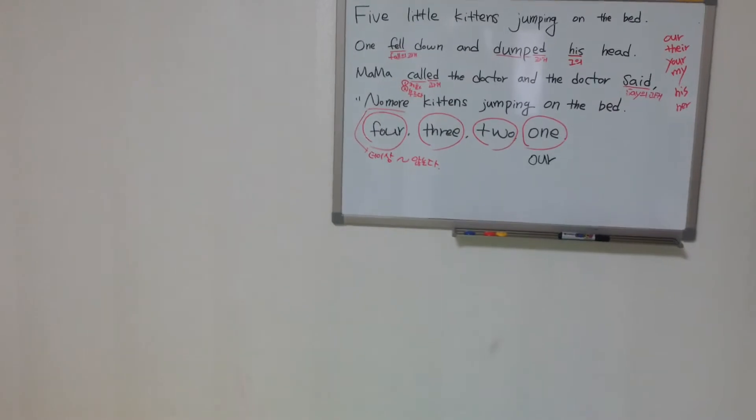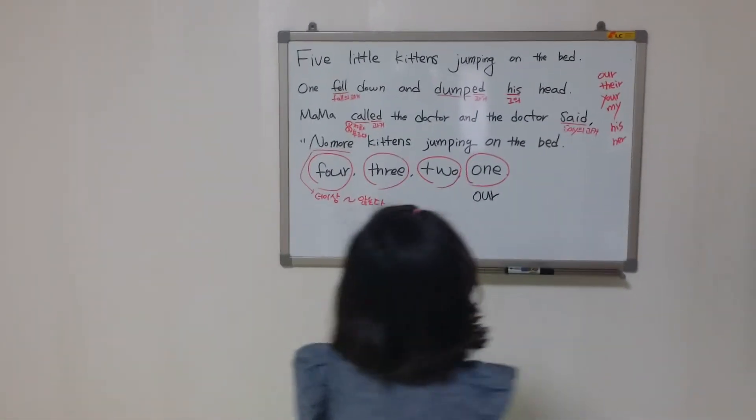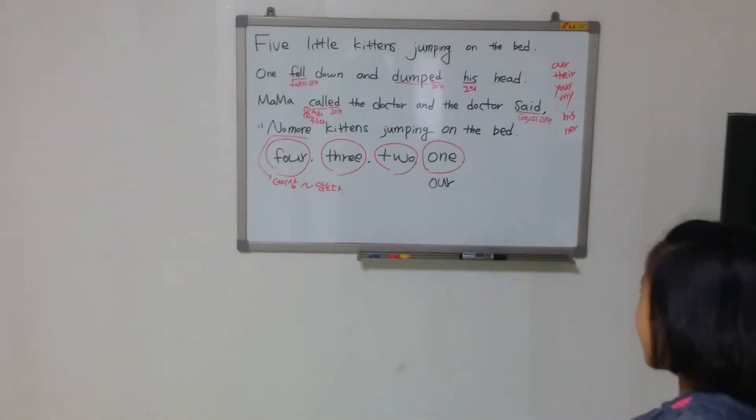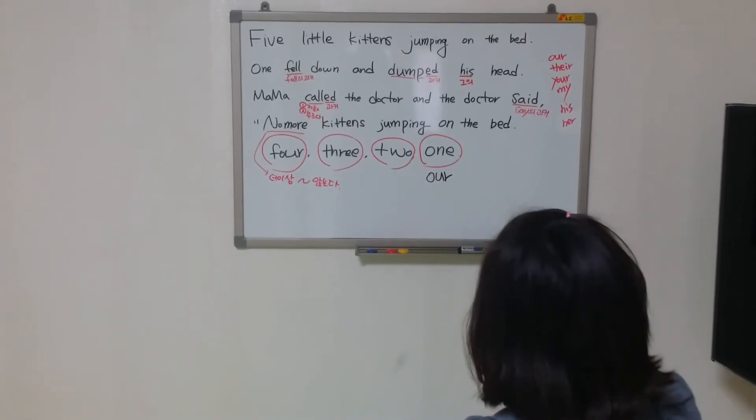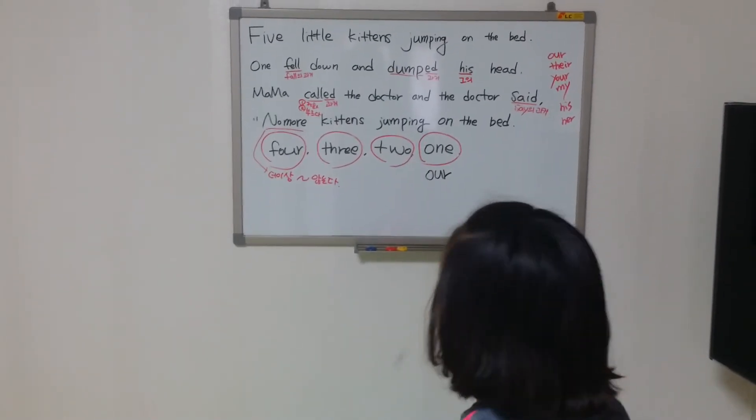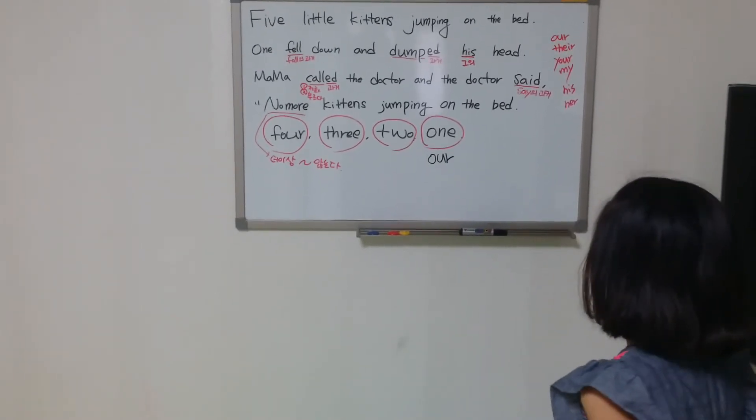Good job, Angel, in Korean. 다섯 마리의 작은 새끼 고양이들이 침대 위에서 뛰고 있어요. 한 마리의 새끼...